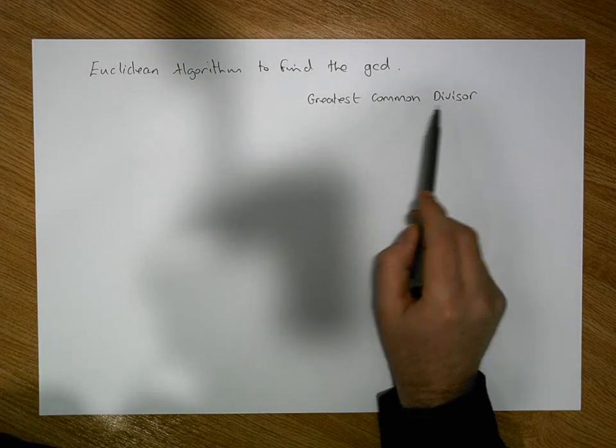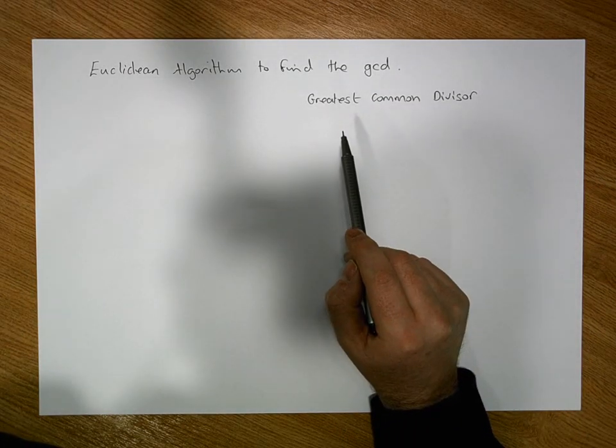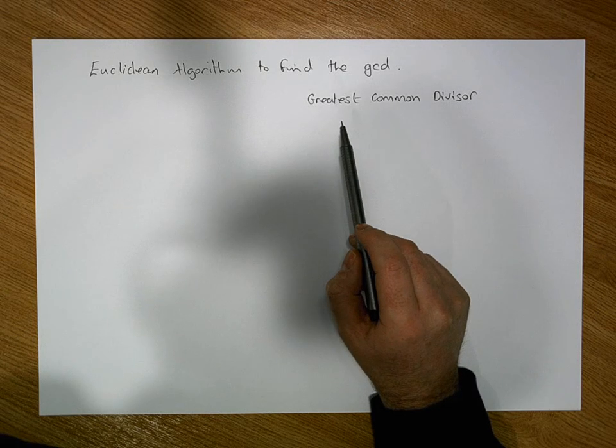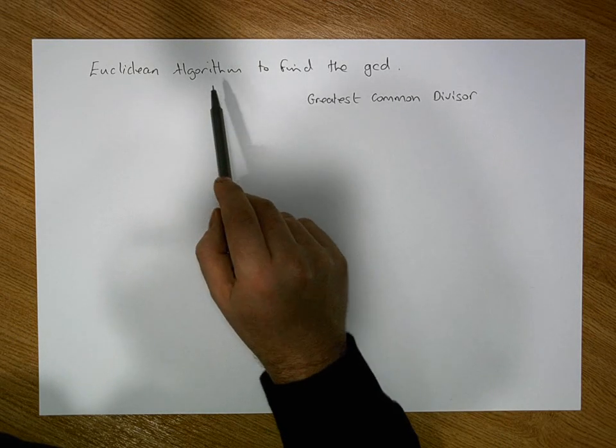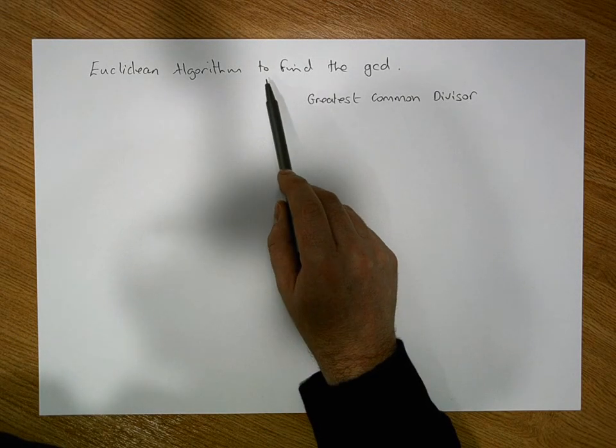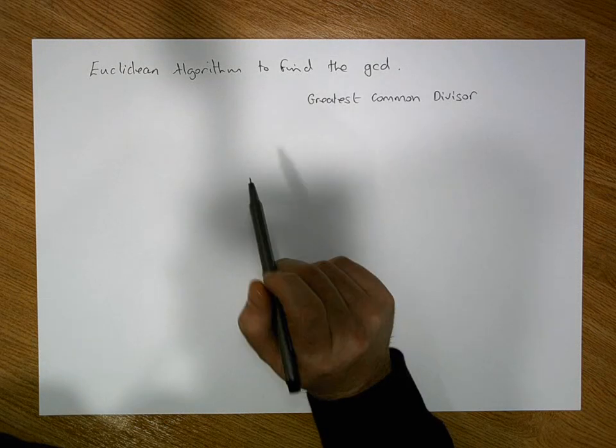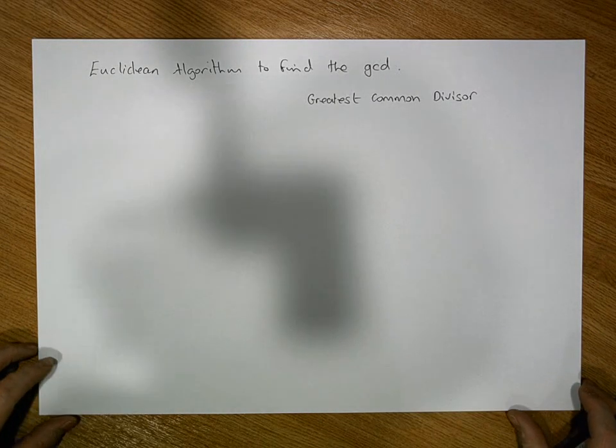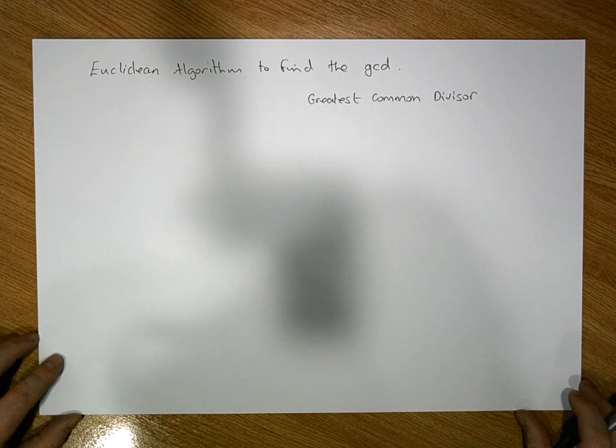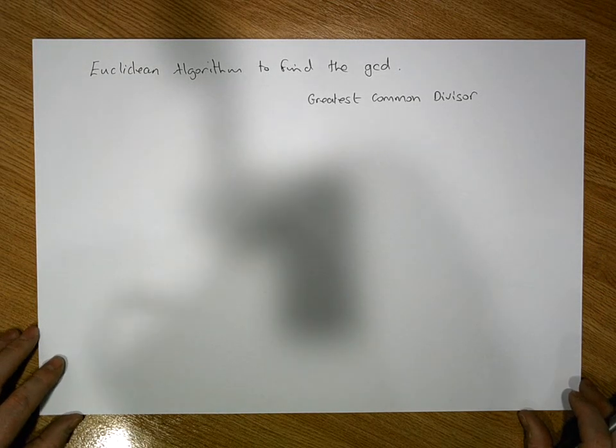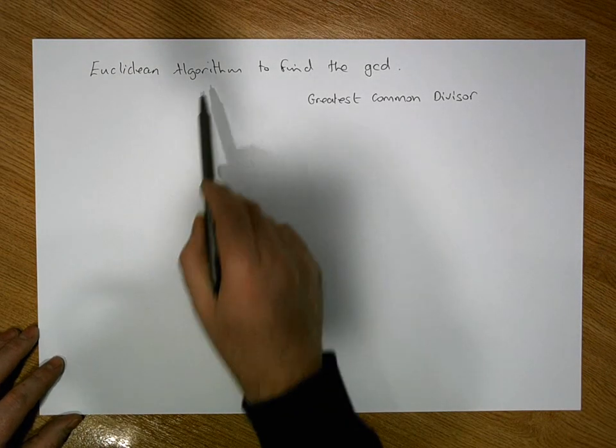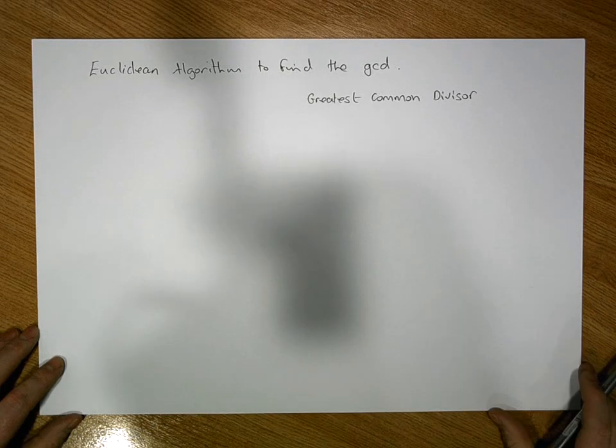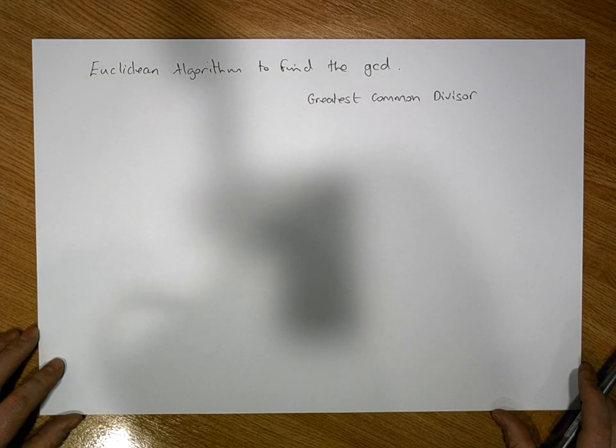More importantly, we're going to use the Euclidean algorithm, which is going to help us find the GCD, the greatest common divisor, of two numbers. Just as an example, for my students, the primary use of the Euclidean algorithm and finding the GCD is in relation to when they're using a cipher to encrypt and decrypt a particular piece of plain text.